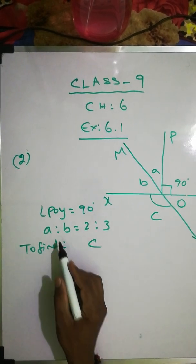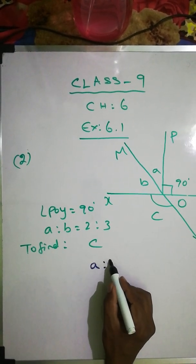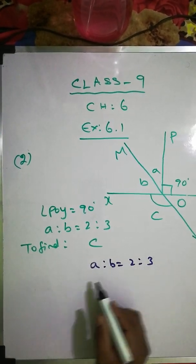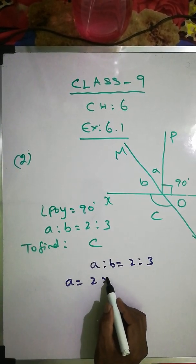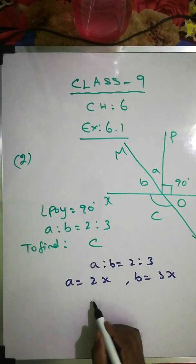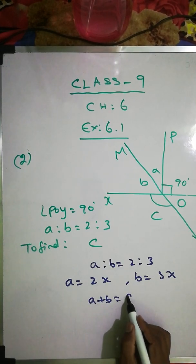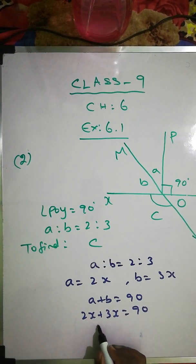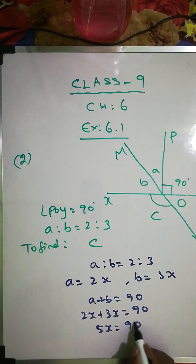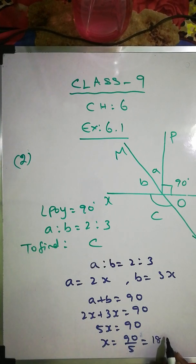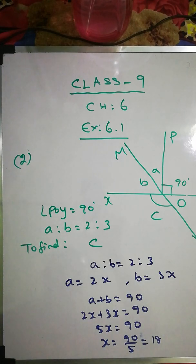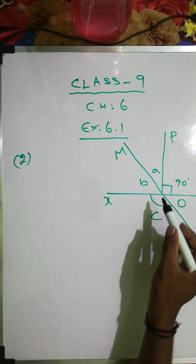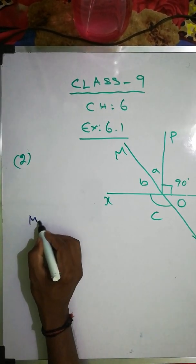Since A is to B equals 2 is to 3, we can write A equals 2x and B equals 3x. Applying A plus B equals 90: 2x plus 3x equals 90, so 5x equals 90, therefore x equals 90 divided by 5, which gives x equals 18.